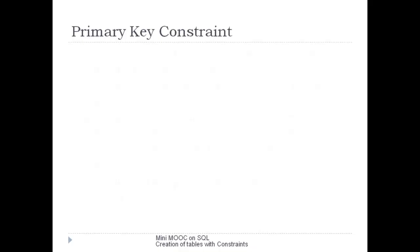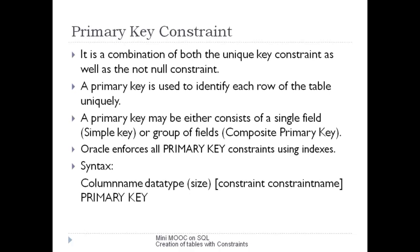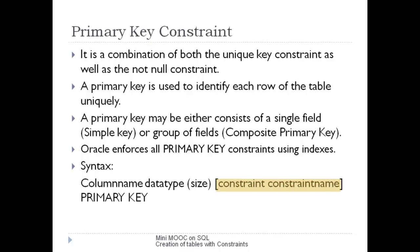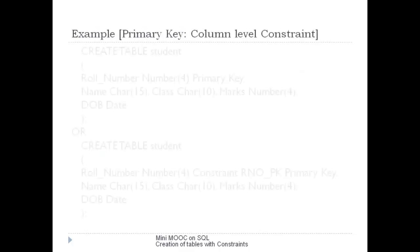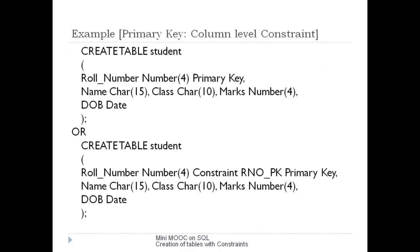The PRIMARY KEY constraint enforces both uniqueness and non-null at the same time. It is a combination of both UNIQUE and NOT NULL constraints and is used to identify a unique row of a table. If the primary key is applied on a single column it is called a simple key; if applied on a combination of columns it is known as a composite key. The syntax is: column name, data type, size, PRIMARY KEY. We can also give our own constraint name. Let us apply this constraint on the student table and execute the statement.